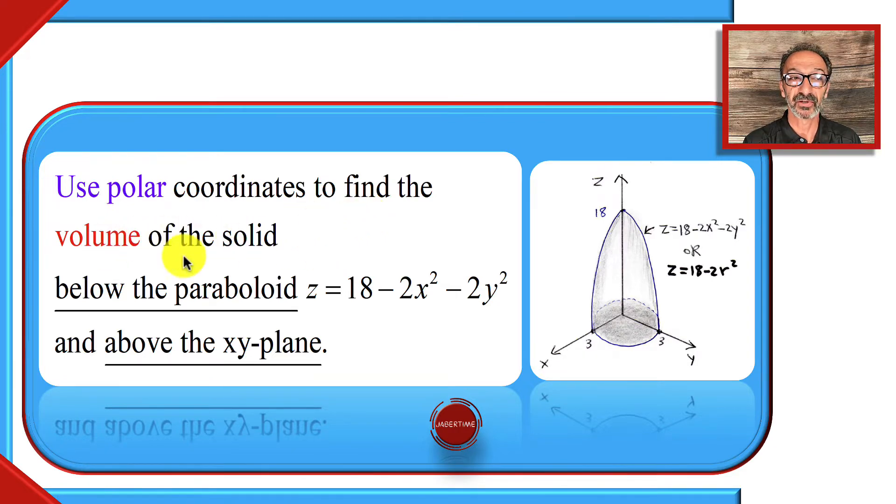Use polar coordinates to find the volume of the solid below the paraboloid z equals 18 minus 2x squared minus 2y squared. As you can see from here, it's shifted 18 units up, and since it has minus x squared and minus y squared parts, it's opening down to the xy-plane. We're going to stop right here above the xy-plane.